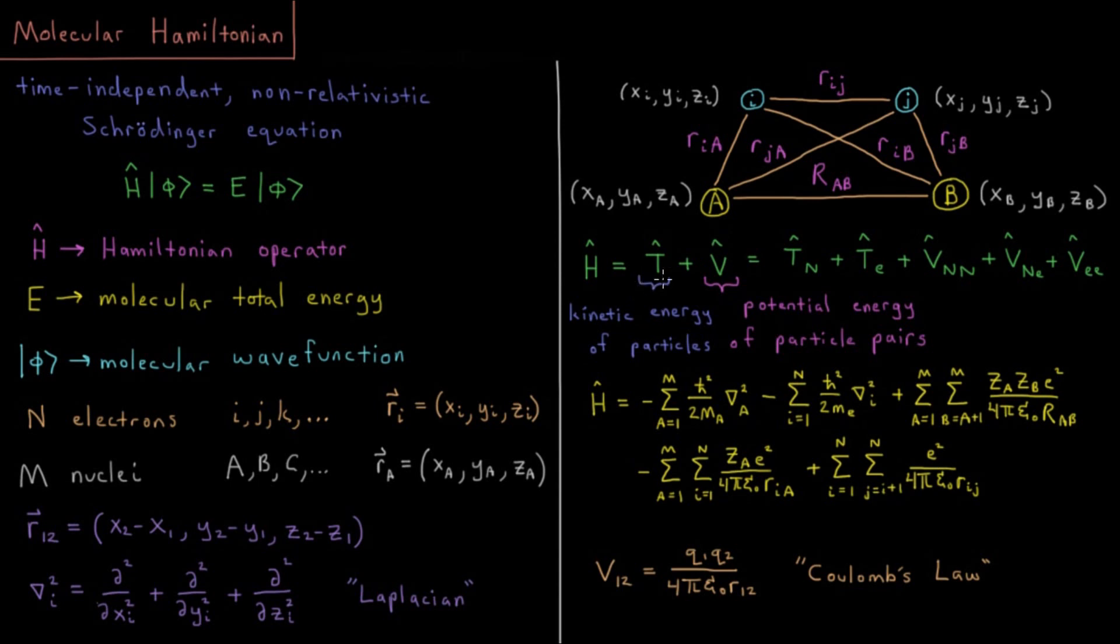This kinetic energy is the kinetic energy of all particles, every electron and nucleus. V is the potential energy from all particle pairs interacting with one another. If there are four particles here, every possible set of pairs gives these six interactions indicated in orange.